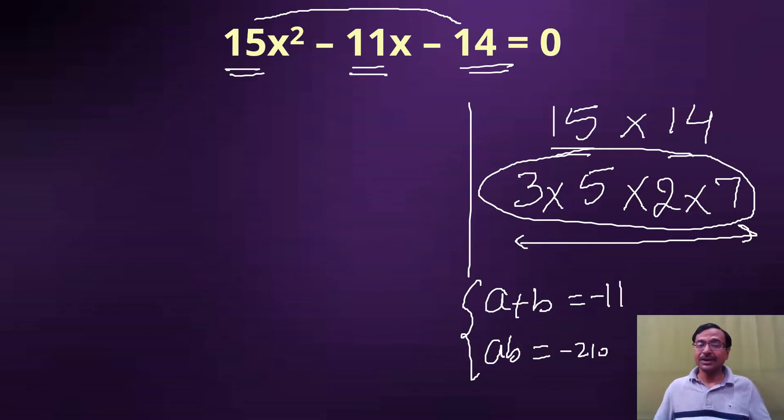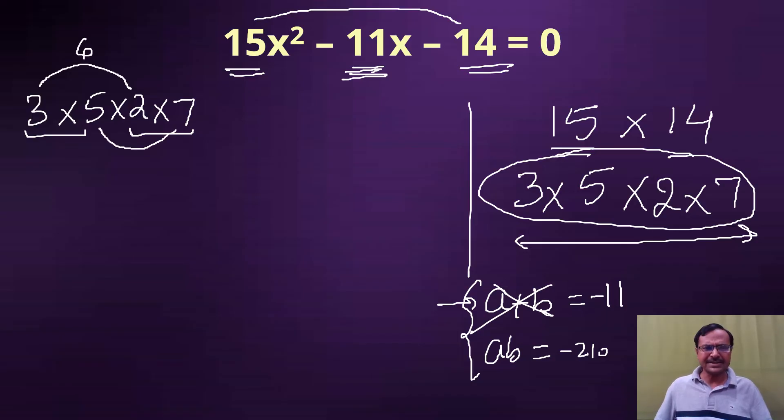Now 3 into 5 into 2 into 7, let's convert 3 into 5 into 2 into 7 into 2 factors whose sum or difference is 11. So 15 and 14, it's not going to give me a difference or sum of 11. So if I combine like this, 6 and 5, 7 is 35, 35 and 6 is not going to add up to 11 or difference will not be 11. What else is the possibility? 3 times 7 is 21 and 5 times 2 is 10.